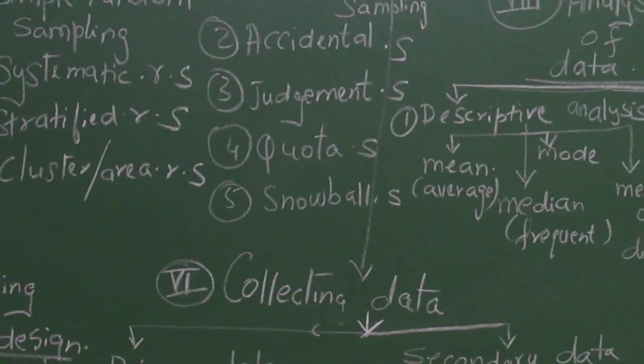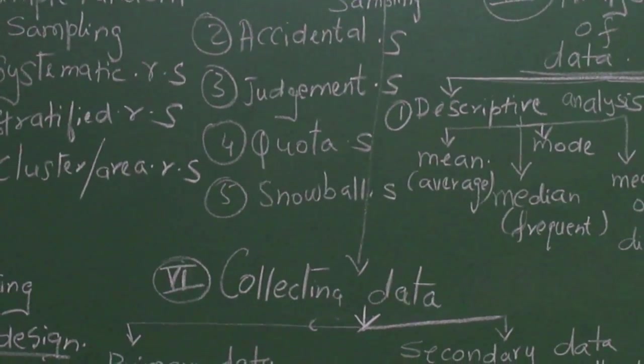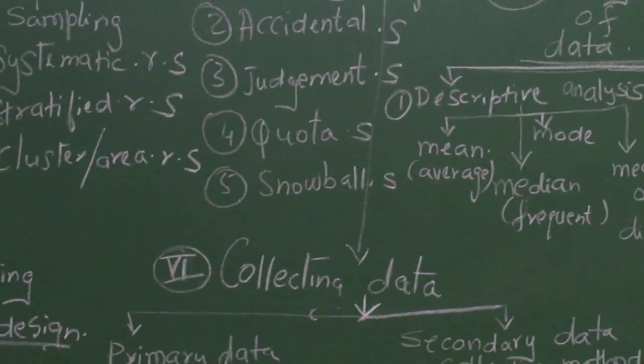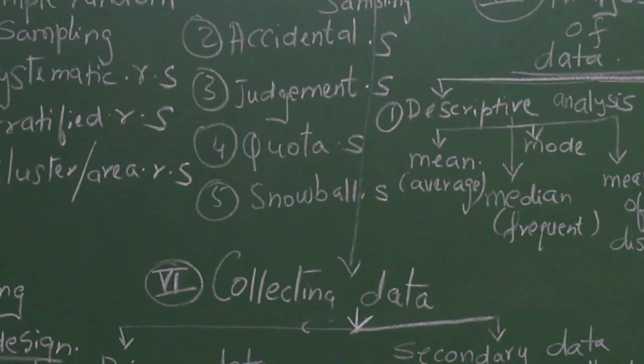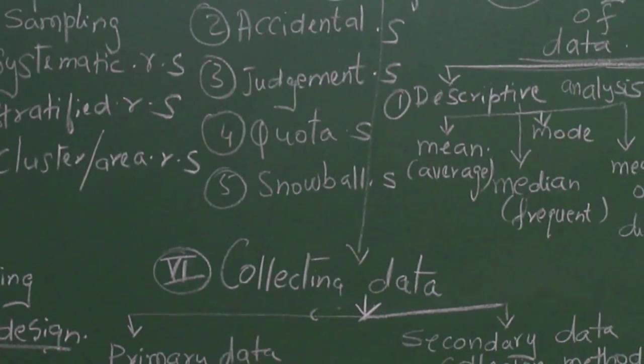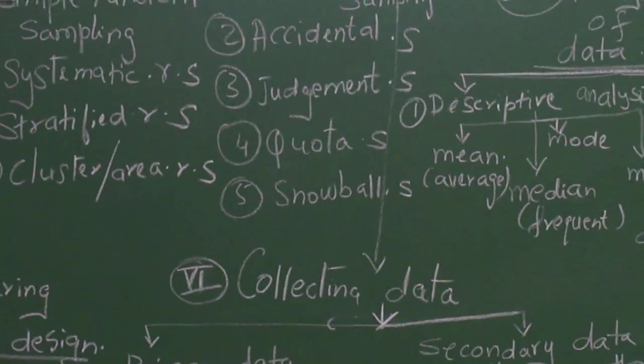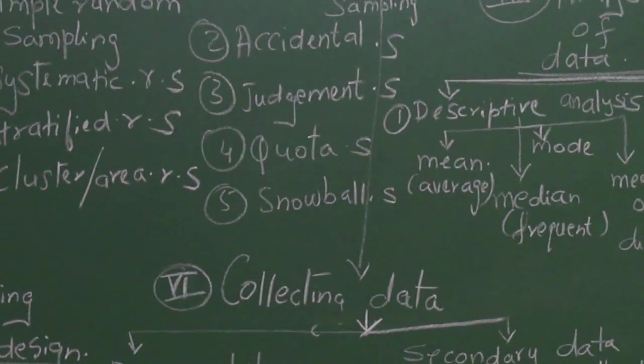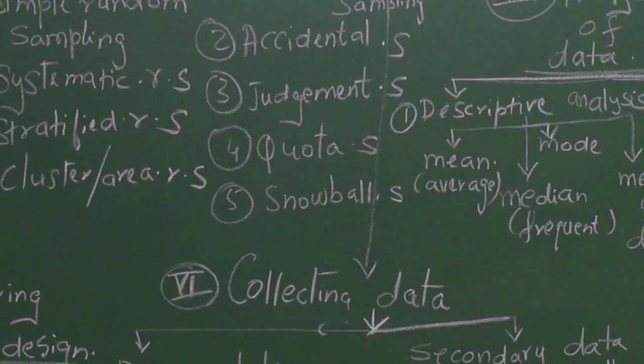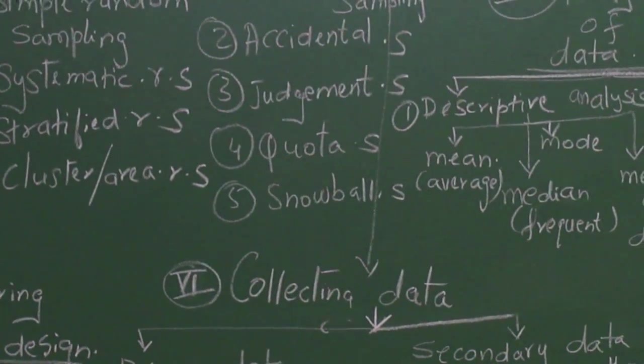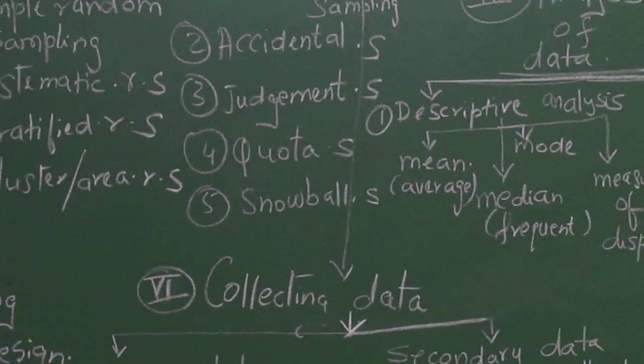Then there is quota. For example, suppose I have three schools. One is really near to me, so I take 80% of my questionnaires filled up from that school. Then I go to a school that is a little far away and take the 20%. So I allot a kind of quota system.